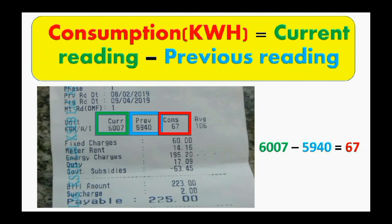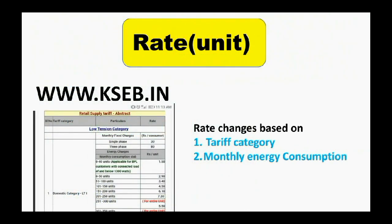Firstly I introduce electricity consumption. It is a measurement of electric energy and it shows how much energy is used. For calculating electric consumption at home, use this formula: current reading minus previous reading. Electric rate means how much amount of money you will pay for a single unit consumption. Electricity rate depends on the tariff category and monthly energy consumption.